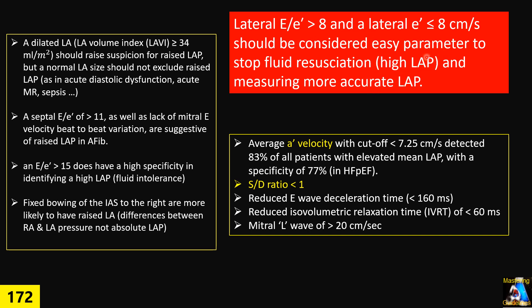In cases where we don't have these criteria, we can use other parameters to evaluate left atrial pressure. Among them is left atrial volume index: if it is equal to or more than 34 milliliters per square meter, we should be suspicious of high left atrial pressure. However, in patients with atrial fibrillation or flutter, we expect left atrial enlargement without necessarily high left atrial pressure. Also, a normal left atrial size never rules out diastolic dysfunction and high LAP, especially in acute diastolic dysfunction.